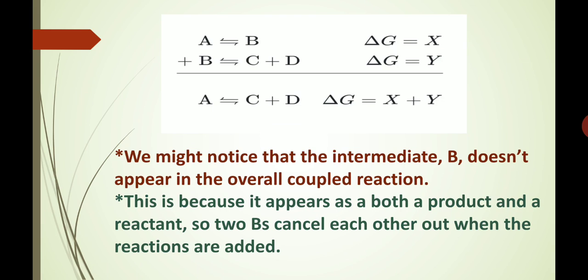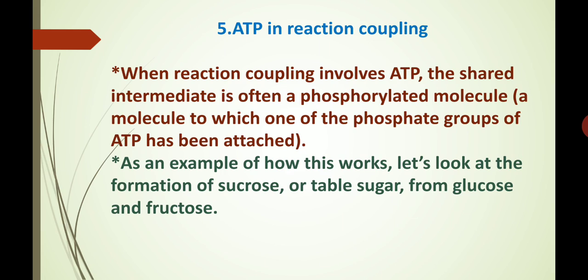This is because B appears as both a product and a reactant — in the first reaction it is the product, and in the second reaction it is the reactant. So, the two Bs cancel each other out when the reactions are added. Now, we see ATP in reaction coupling. When reaction coupling involves ATP, the shared intermediate is often a phosphorylated molecule.